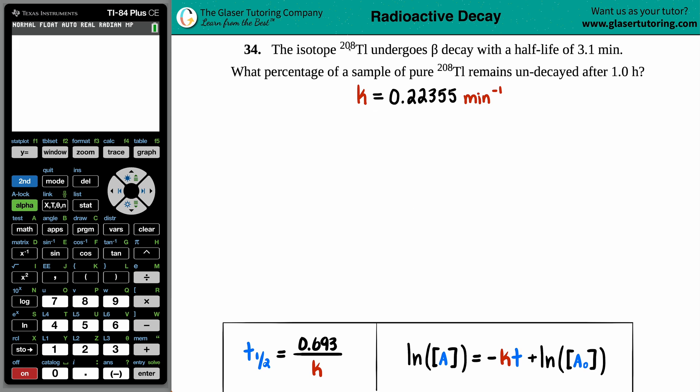Number 34, the isotope thallium-208 undergoes beta decay with a half-life of 3.1 minutes. And then we have this question. So it says, what percentage of the sample of pure thallium-208 remains undecayed after 1.0 hours? Okay, so here we go. Part three, I think, of this question. But if you're coming right in, hello, let's answer this question.